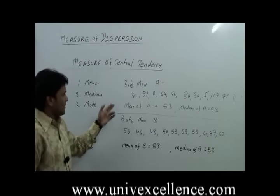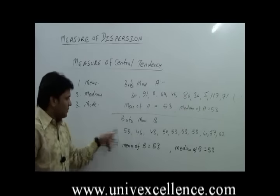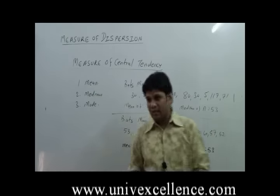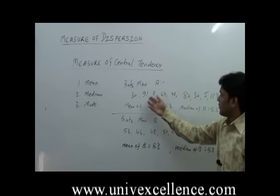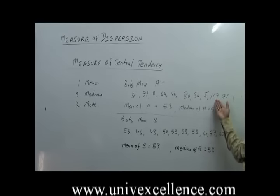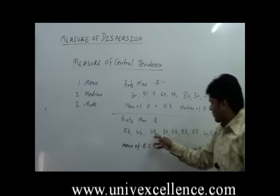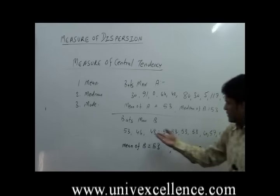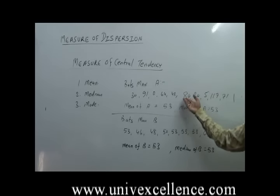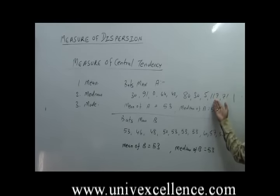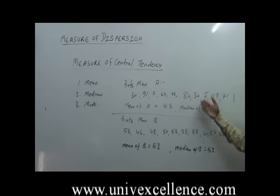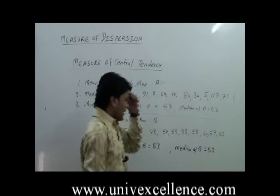Now if we want to analyze the data based on the measure of central tendency, in both cases mean and median are the same. But the data is different — Batsman A scored 30, 90, 91, sometimes 0, sometimes 64, sometimes 117, sometimes only 5, sometimes 71. But Batsman B scored 53, 46, 48, 50, 53, 53, 58, 60, 57, 52. That means Batsman B's performance is more consistent than Batsman A.